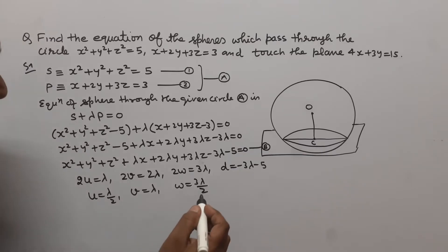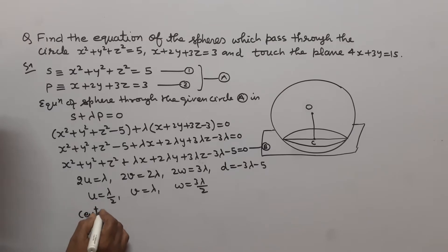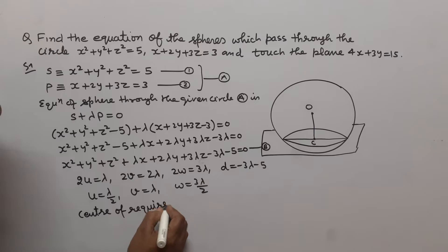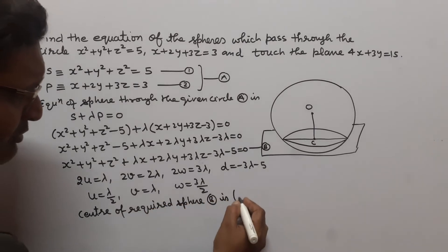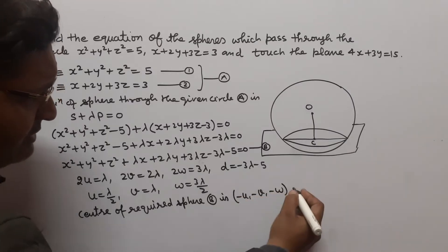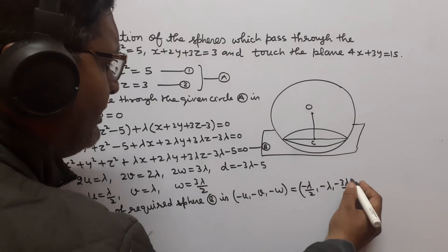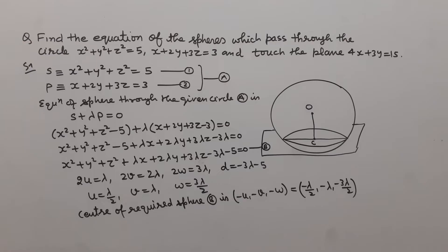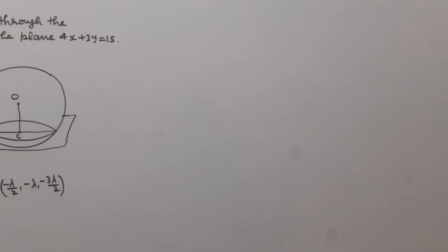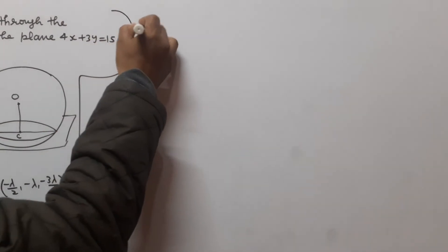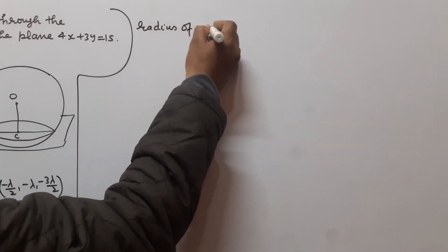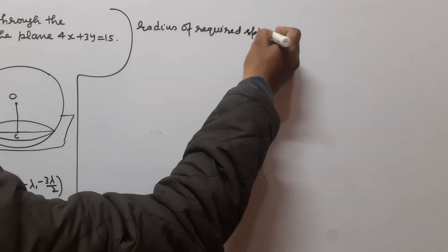Now we find the center of the required sphere. The center is (−U, −V, −W), that is (−λ/2, −λ, −3λ/2). This is the coordinate of the center of the required sphere. Now we find the radius using the formula: radius = √(U² + V² + W² − D).